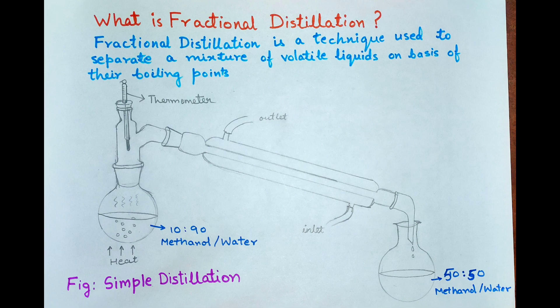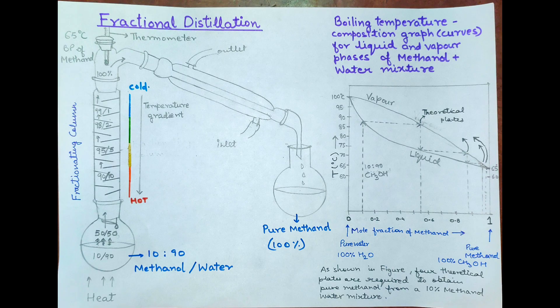We will have a mixture of 50% methanol. To obtain pure methanol, we have to distill again and again until we get 100% methanol. So to simplify this, we can use a fractionating column instead of distilling again and again.